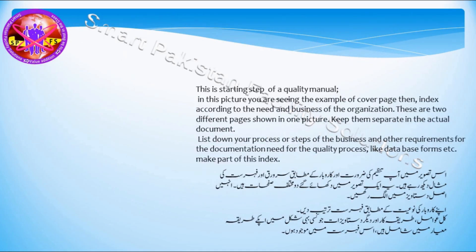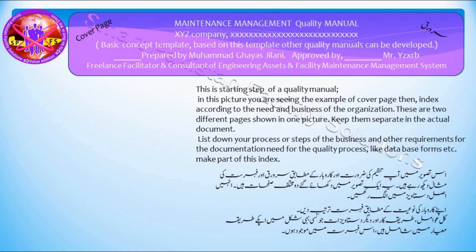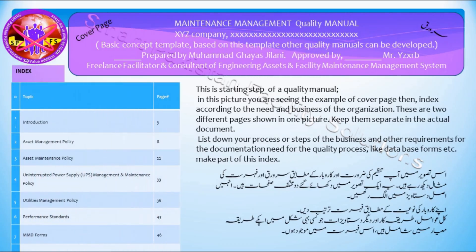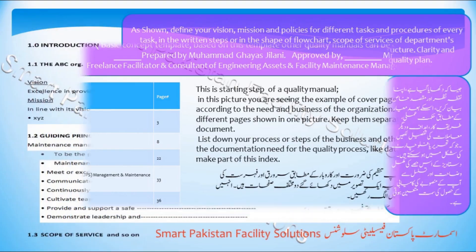This is how to start a quality manual. In this picture you are seeing the example of a cover page, then an index according to the needs and business of the organization — these are two different pages shown in one picture, so keep them separate in the actual document. List down your processes or steps of the business and other requirements for documentation needed for the quality process, like database forms, and make them part of this index.